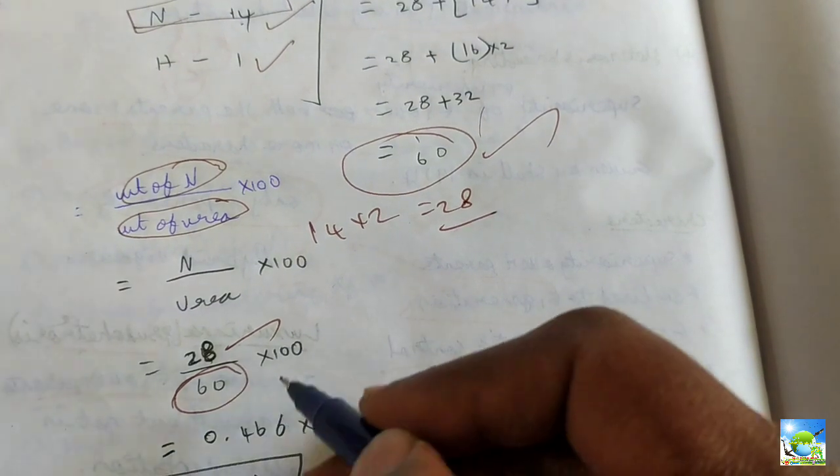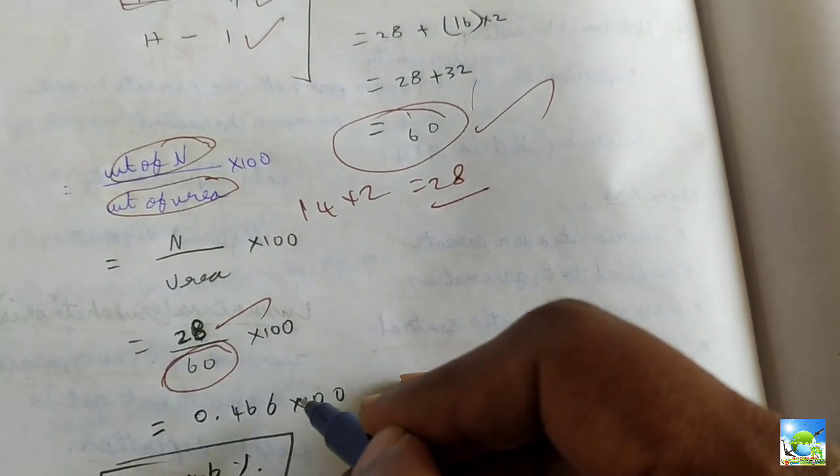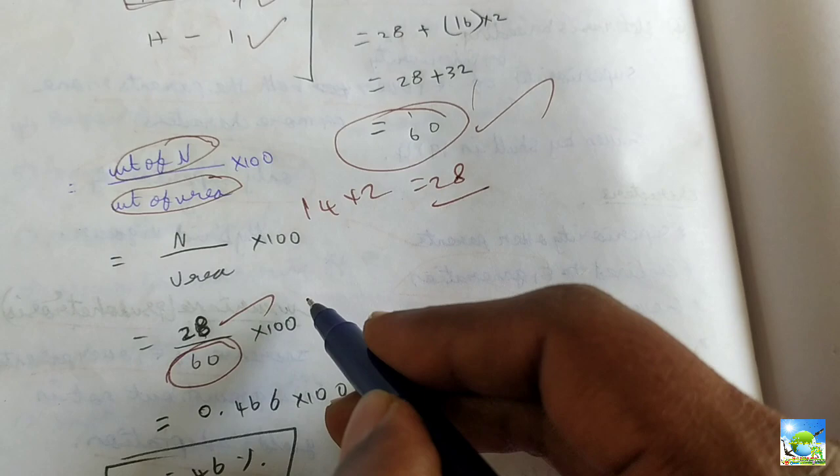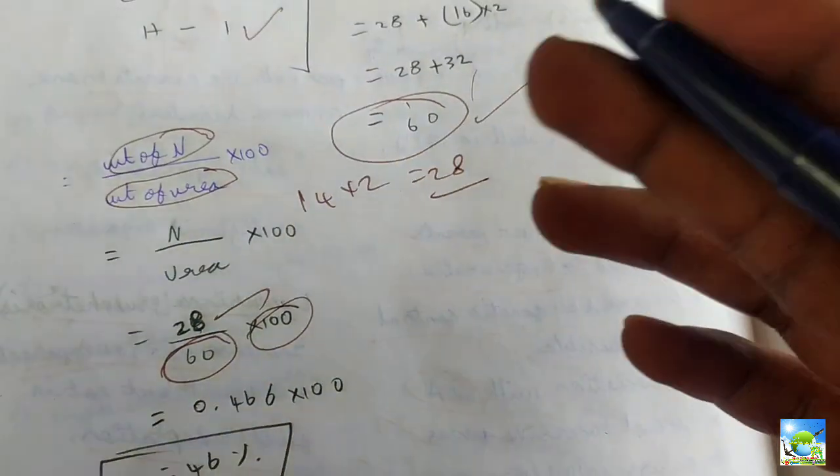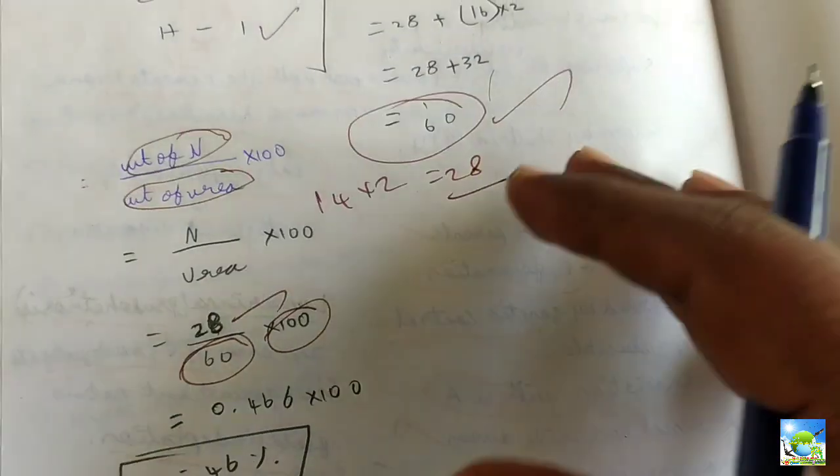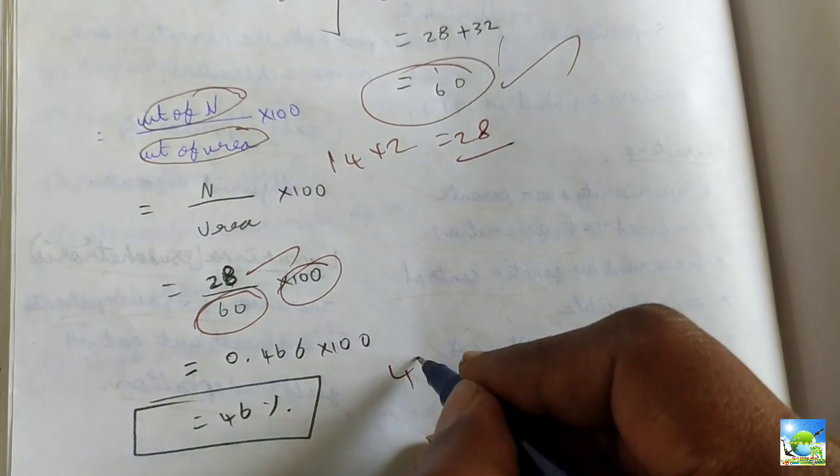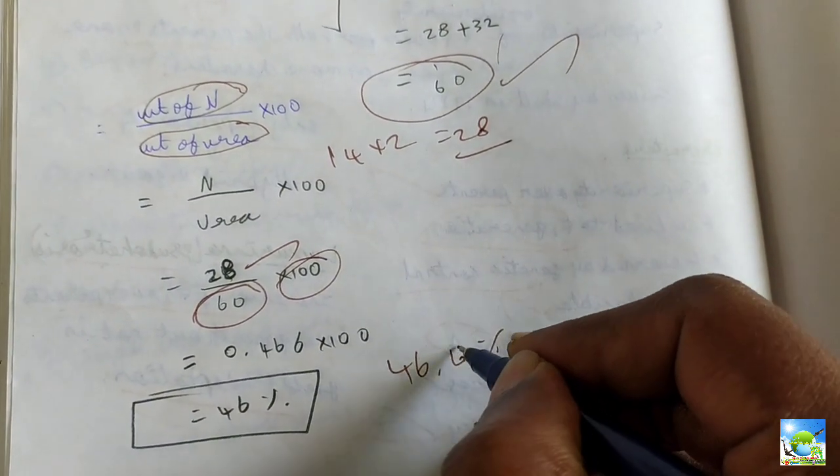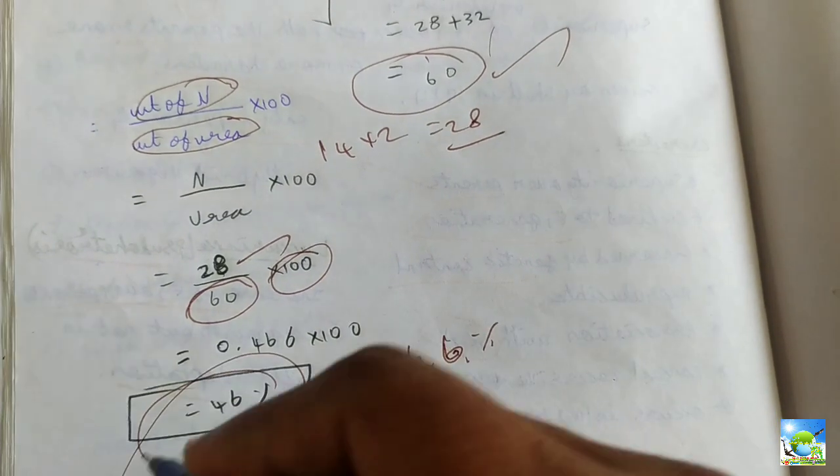When we simplify this one, 0.466 into 100. This 100 is for converting into percentage. We all know this basic calculation. When we simplify, we will get 46.6, but literally we will tell it is 46 percentage.